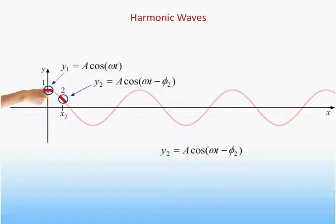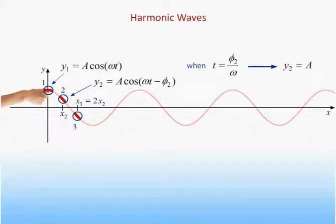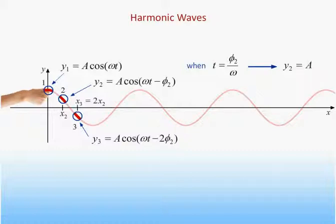To check that this form works, just consider phi to be the value of omega t when the point in question first reaches its maximum value. The argument of the cosine will be zero, and the displacement will be maximum at this time. Let's now consider a point twice as far from the end as the first point. Clearly, the negative constant we need to add to describe the motion of this point will be twice as big as that for the first point, since it takes twice as long for the wave to reach that point.